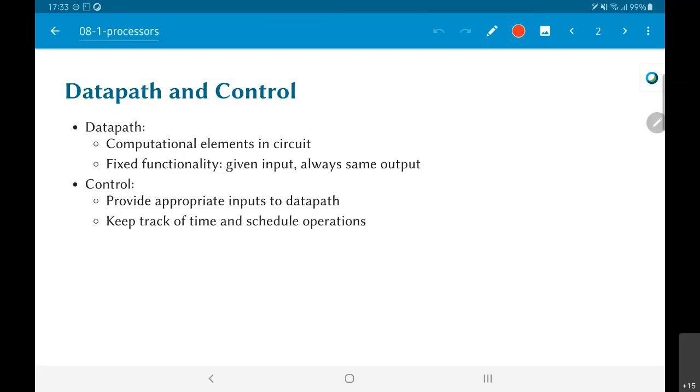But very often what we find is even the comparisons and so on are done in the data path and only a signal is provided to the control which is then used in order to decide what to do.